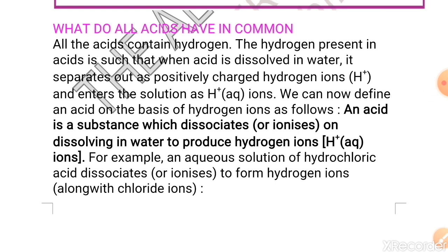Students, this is the Arrhenius concept of acids and bases. It is not complete but yet, if we are going to define a substance as acid on the basis of Arrhenius concept, then we will say an acid is a substance which dissociates or ionizes on dissolving in water to produce hydrogen ion.